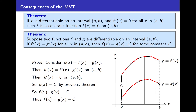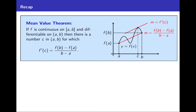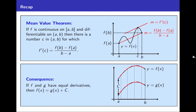That's it for today. We've introduced the Mean Value Theorem: if f is continuous on a closed interval from a to b and differentiable on the open interval from a to b, then there is a number c in the open interval from a to b for which f prime of c equals f of b minus f of a over b minus a — with its simple geometric picture. We've also seen an important consequence: if f and g have equal derivatives, then f of x equals g of x plus c for a constant c. Keep that consequence in mind — you'll see it again soon. Goodbye.